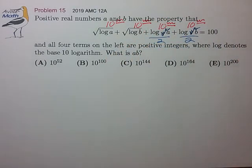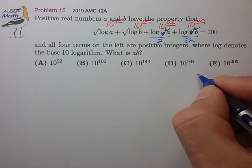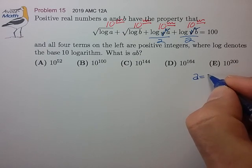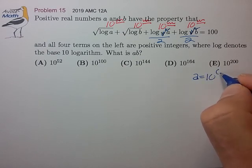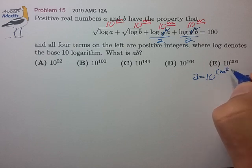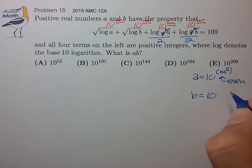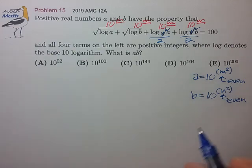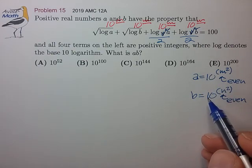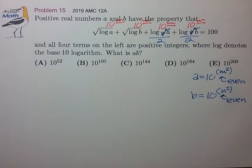So taken all together it looks like we have that a is equal to 10 to some integer m where this is an even number, and likewise for b, 10 to some integer n, perhaps different but also an even number. Let's take these two forms and plug them into our original equation and see what that tells us.